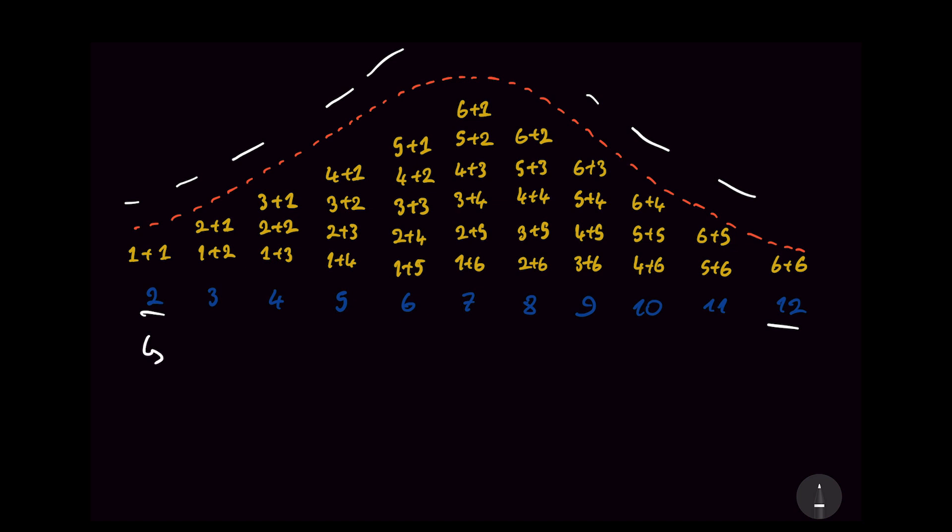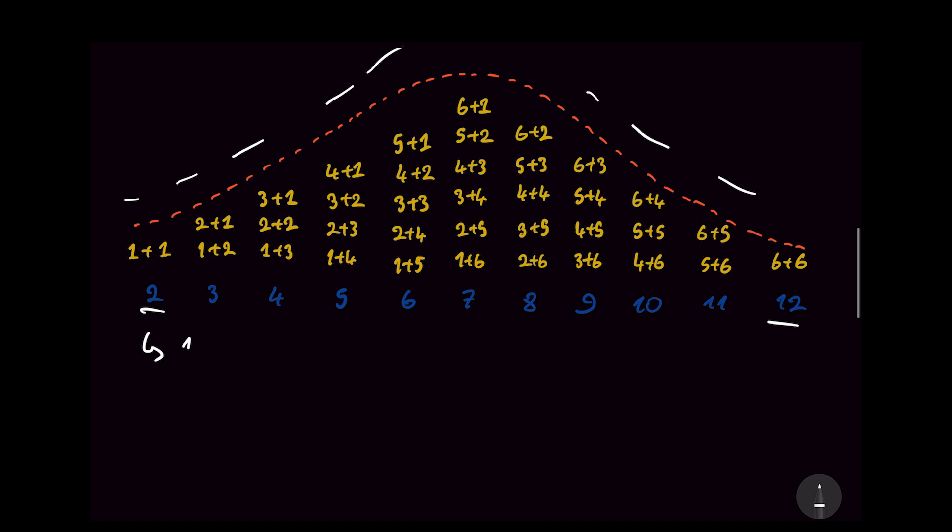If we were to look at the probabilities now, to get a 1 on one die, we have a 1 in 6 probability. To get a 1 on the other die at the same time, we just multiply that with that probability. And we get a 1 over 36 to roll a 2 on the two dice.